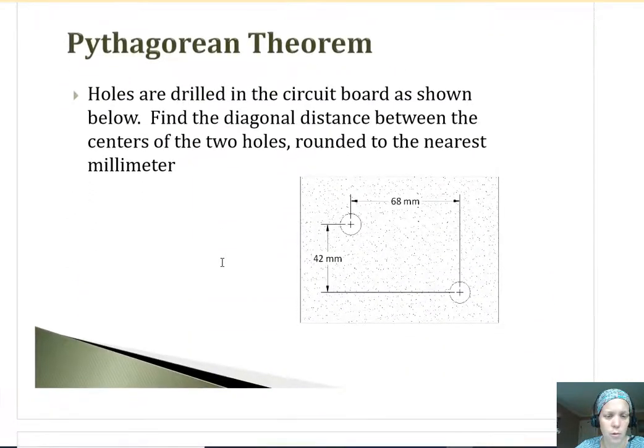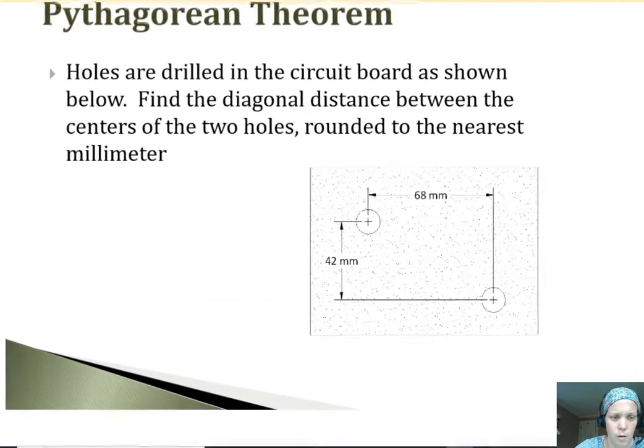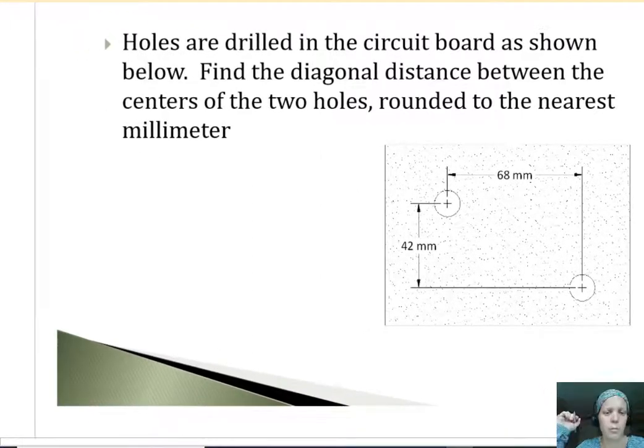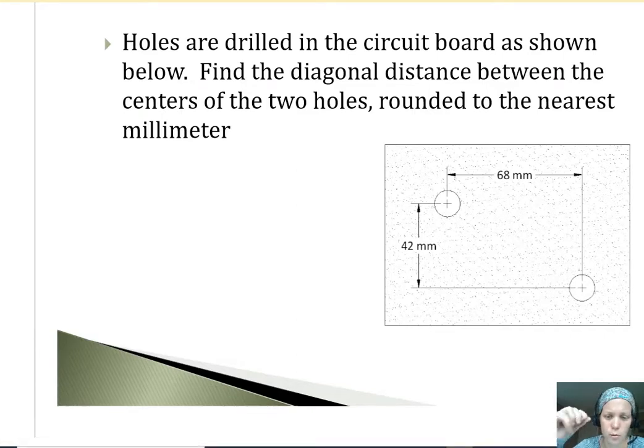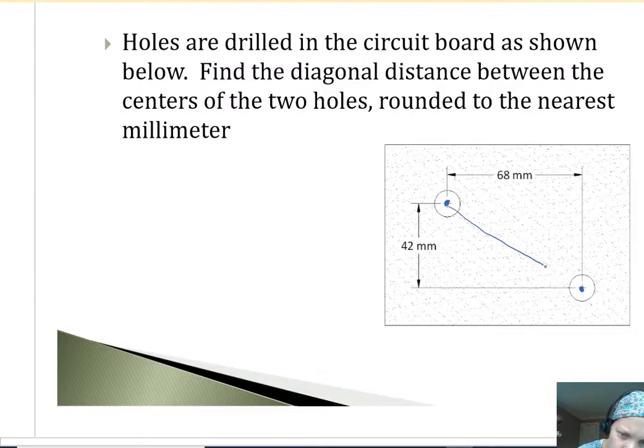Okay. One more. So this one, the holes need to be drilled into a circuit board, as shown below. Find the diagonal distance between the center of the two holes. Okay. So if I'm going from here to here, okay, I'm making a circle. A straight point between the center of those two holes. What's the distance? So I can make a triangle either above that line or below. It's going to go straight down, straight across. So here's a situation where I can kind of make this into a right triangle, make a 90 degree angle, and I've got 42 and 68.